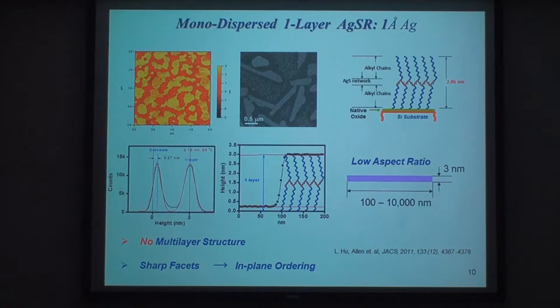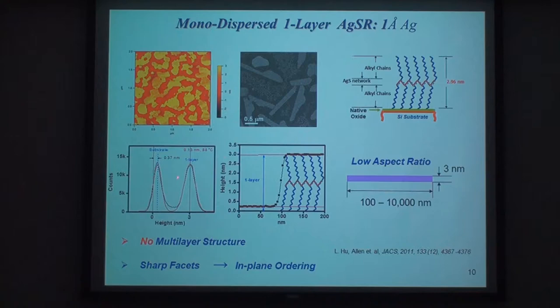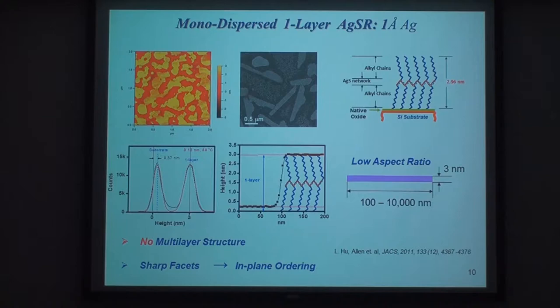This slide shows that with our new synthesis method, we are able to grow monodispersed single layers—purely one-layer crystals on the substrate. As shown in the AFM image and the AFM height histogram, there is a single peak corresponding to the height of the single layer. The average step height is only 3 nanometers for these C10 structures—10 carbons in the alkyl chain—a thickness of only 3 nanometers. However, the lateral dimensions are in the micron scale, so the aspect ratio—thickness over lateral dimension—is very small.